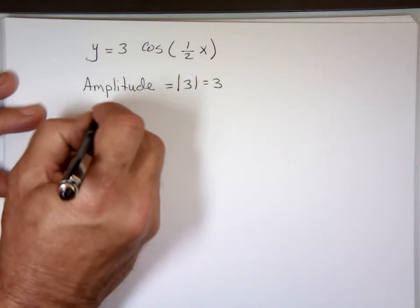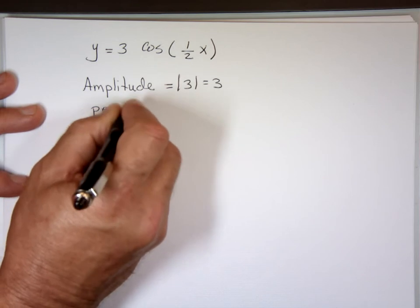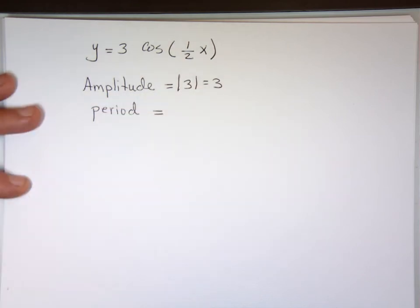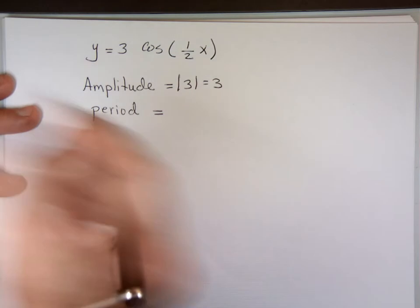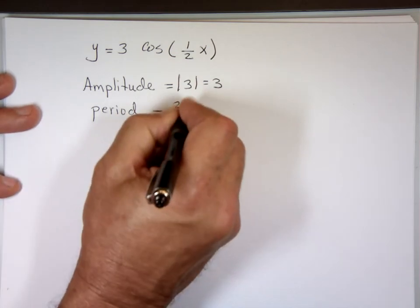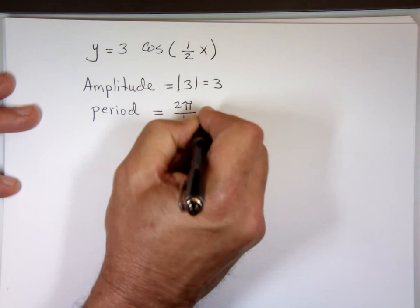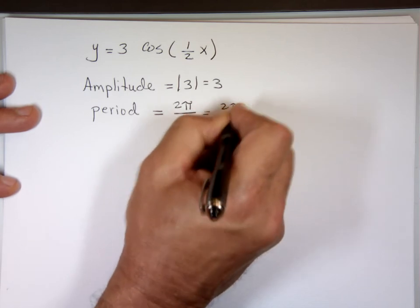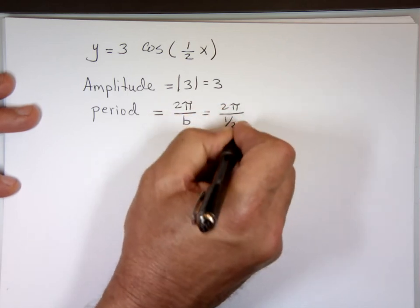The period is 2 pi over b. What is b here? 2 pi over a half or 0.5.